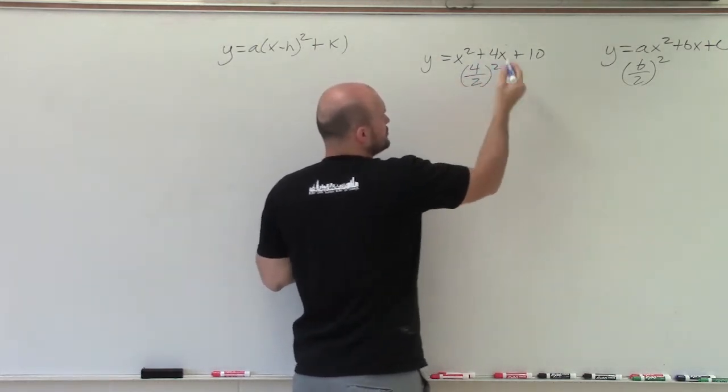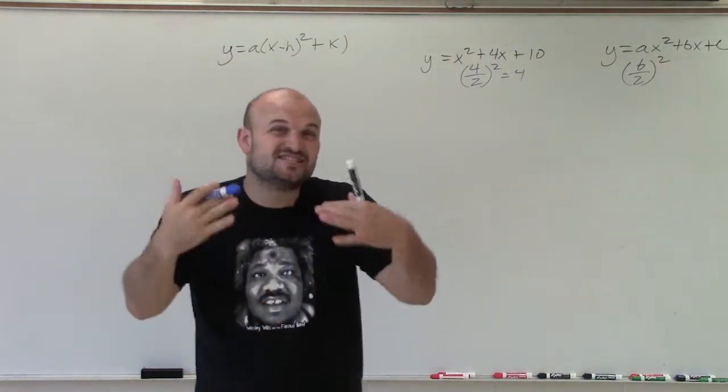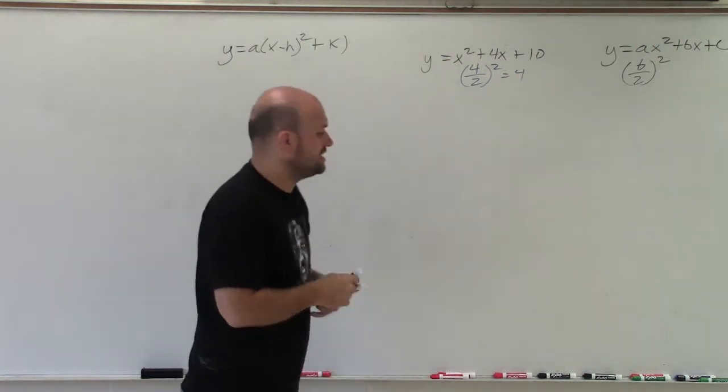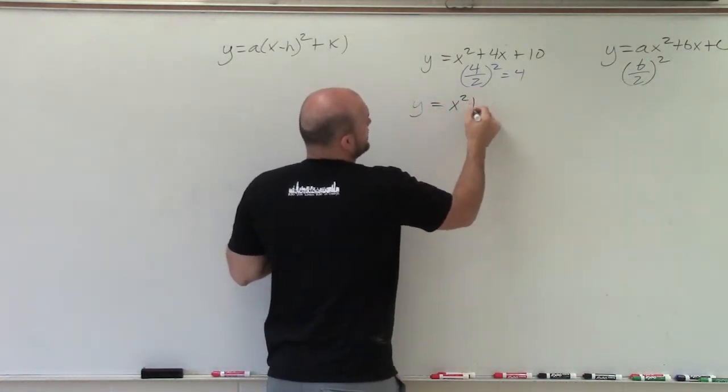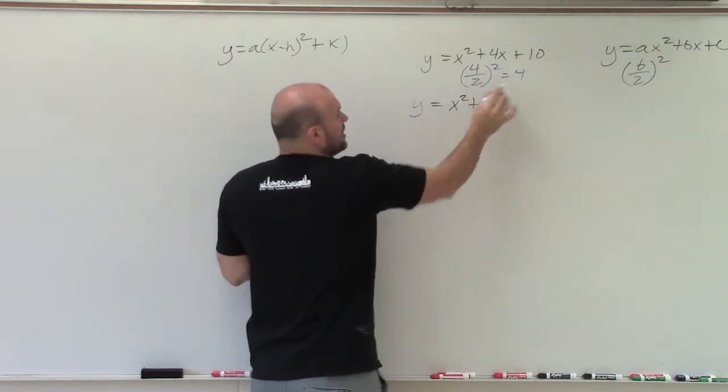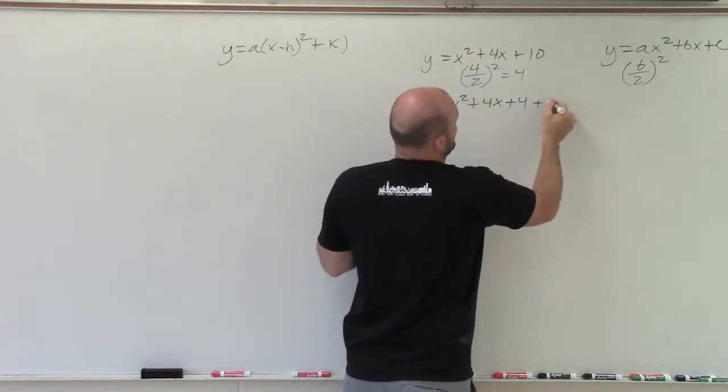So now I can simply take 4 divided by 2 and square it. Well, 4 divided by 2 is 2, and 2 squared equals 4. So now I'm going to insert that into the equation on the right side. So y equals x squared plus 4x plus my new term 4 plus 10.